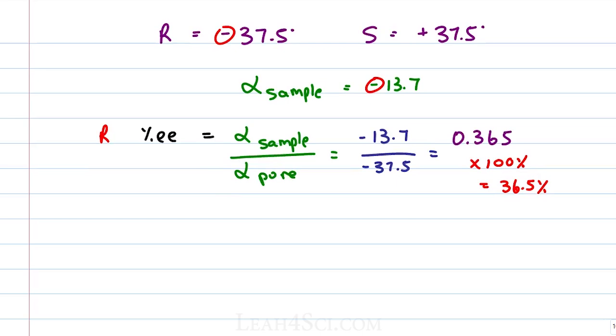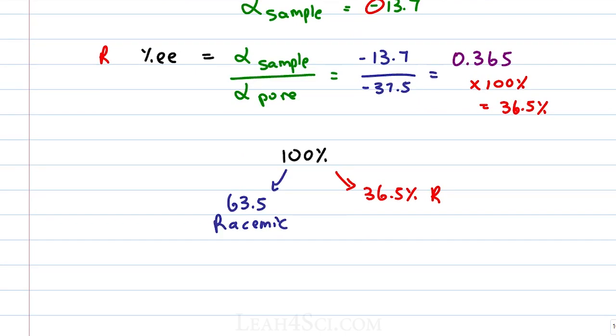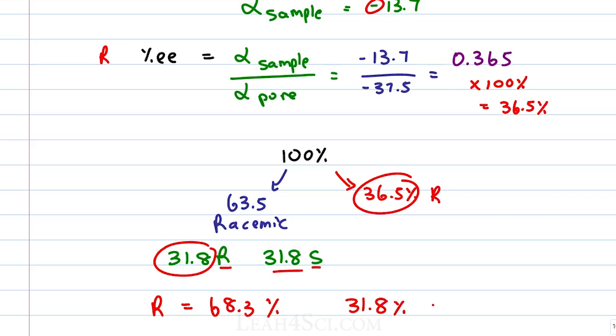What does this mean for the total R and the total S? If we have a hundred percent total, we know that we have 36.5 percent unopposed R and the remainder which is a hundred minus 36.5 which is equal to 63.5 racemic. We have to split this in half because it's half R and half S. So divide by 2 gives me 31.75 which will round up to 31.8 and that gives me 31.8 of R and 31.8 of S. For a total solution of R which is equal to the racemic portion and the enantiomeric excess portion, just add them up and that is equal to 68.3 percent and of course 31.8 percent of S.